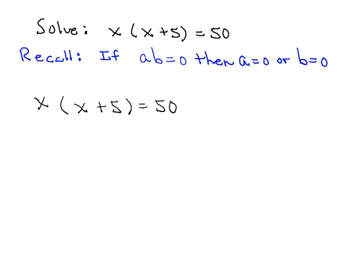Now in that final step, we use something called the zero product property, which I've restated here in blue just to remind you what it is. And that is, if we have the product of two things, in this case A and B, being equal to zero, then either the first factor A is equal to zero or the second factor B is equal to zero.